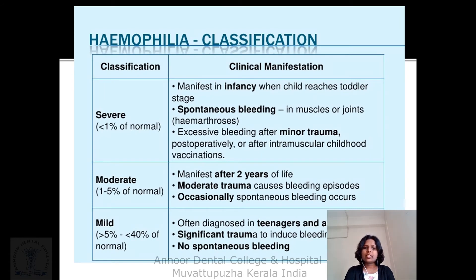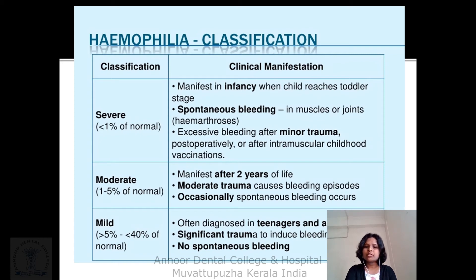Classification of hemophilia: Severe is when factor 8 level is less than 1%, manifesting in infancy with spontaneous hemorrhage in muscles and joints (hemarthrosis) and excessive bleeding after minor trauma. Moderate is 1–5% of normal factor, manifesting after 2 years of life, with bleeding after moderate trauma. Mild is greater than 5% and less than 40% of factor, diagnosed in teens and adults — significant trauma is needed to induce bleeding, with no spontaneous bleeding.